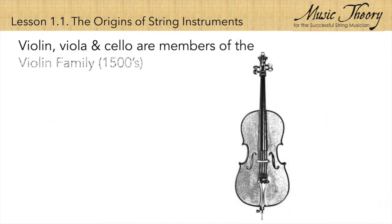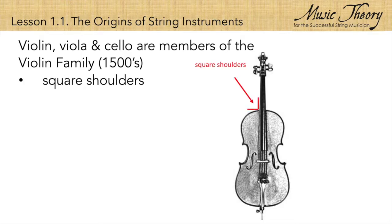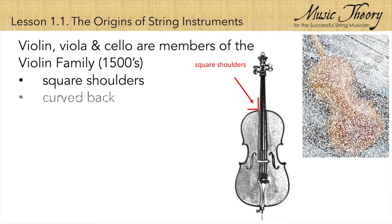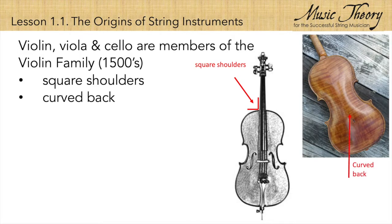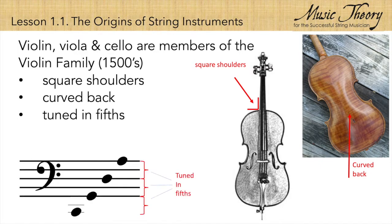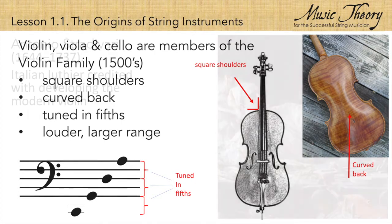The violin, viola, and cello are members of the violin family, which appeared in the 1500s. They have square shoulders, a curved back, and they are tuned in fifths. These instruments have a wider range, and they are much louder than the older viols.